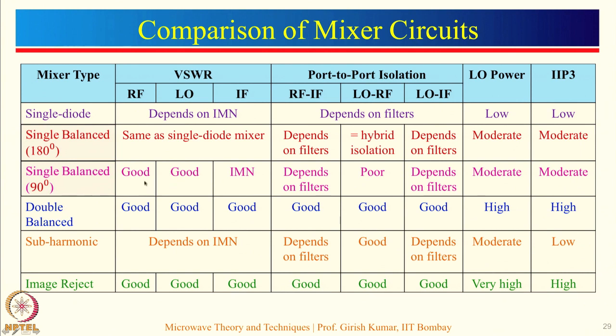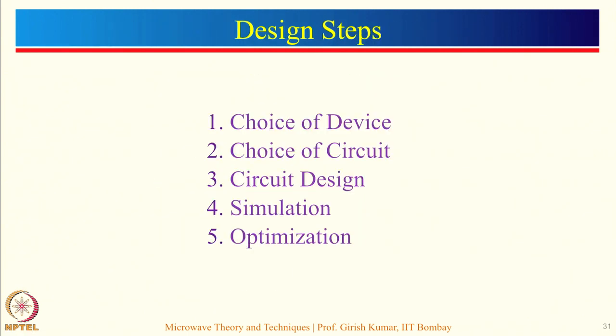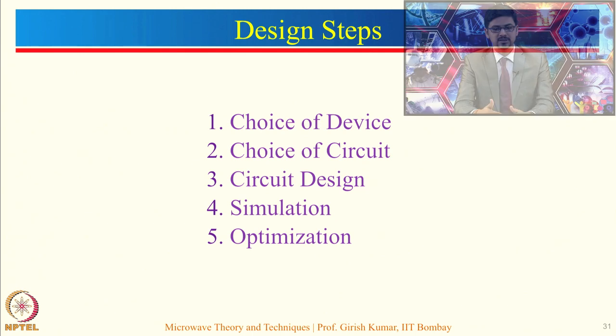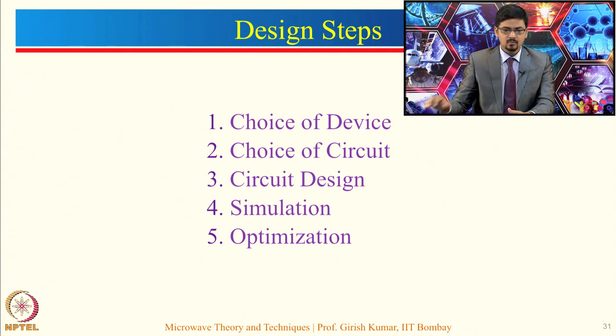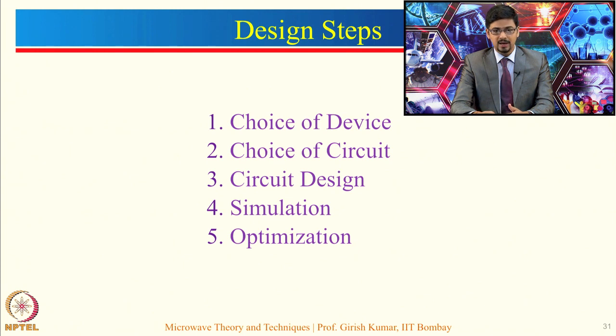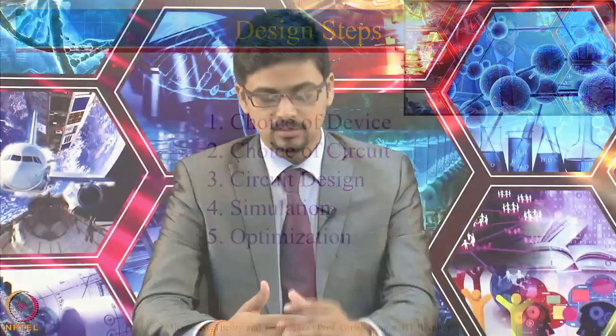For example, if a very high input VSWR for the RF and LO ports is a critical concern, then from the comparison chart, a single balanced mixer implemented using a 90 degree coupler gives very good input VSWRs. Third, you actually build and design the circuit — design the coupling structures, design the biasing of the device, and all the other components around the mixing device. Fourth is simulation — simulate for conversion gain, noise figure, port-to-port isolation, and input VSWRs. Fifth, if specifications are not met after simulation, optimize the circuit by tuning the impedance matching networks, coupling structures, LO signal level, or DC biasing.